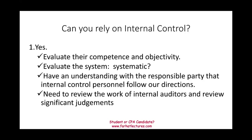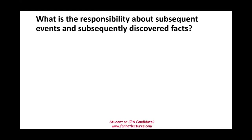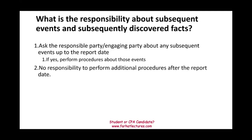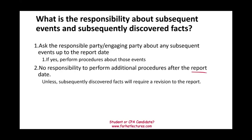Regarding subsequent events and subsequently discovered facts: you have to ask the responsible party or engaging party about any subsequent events up to the report date. If they indicate there are any, perform procedures about those events. We don't have any responsibility after the report date unless a subsequently discovered fact would require a revision to the report. If you find out about something that happened that affects your old report, you have to go back and revisit it.